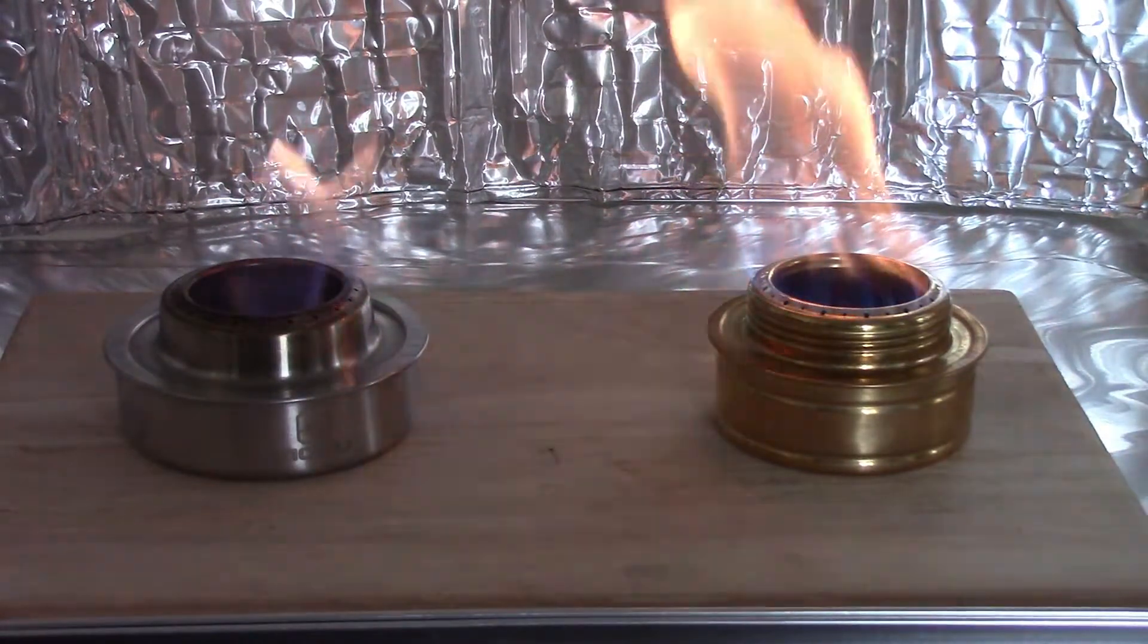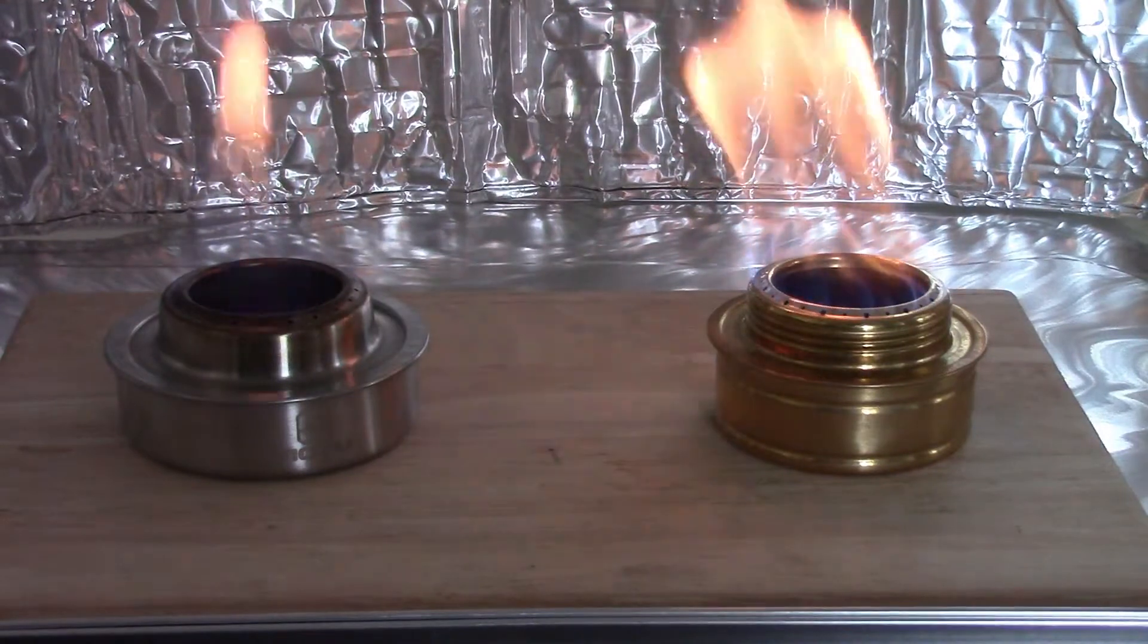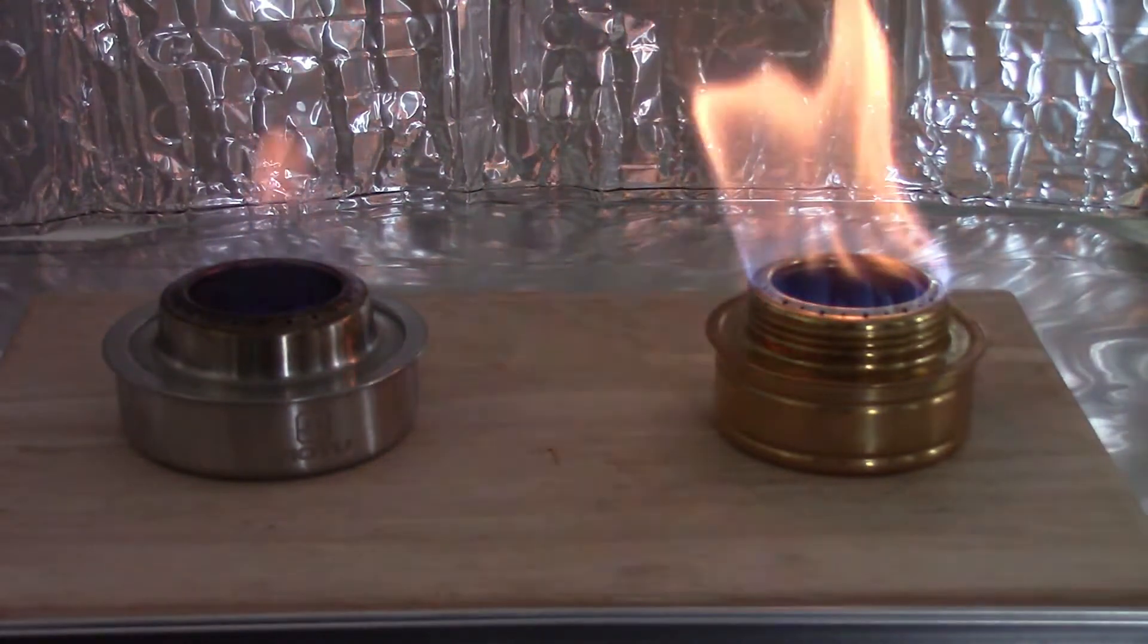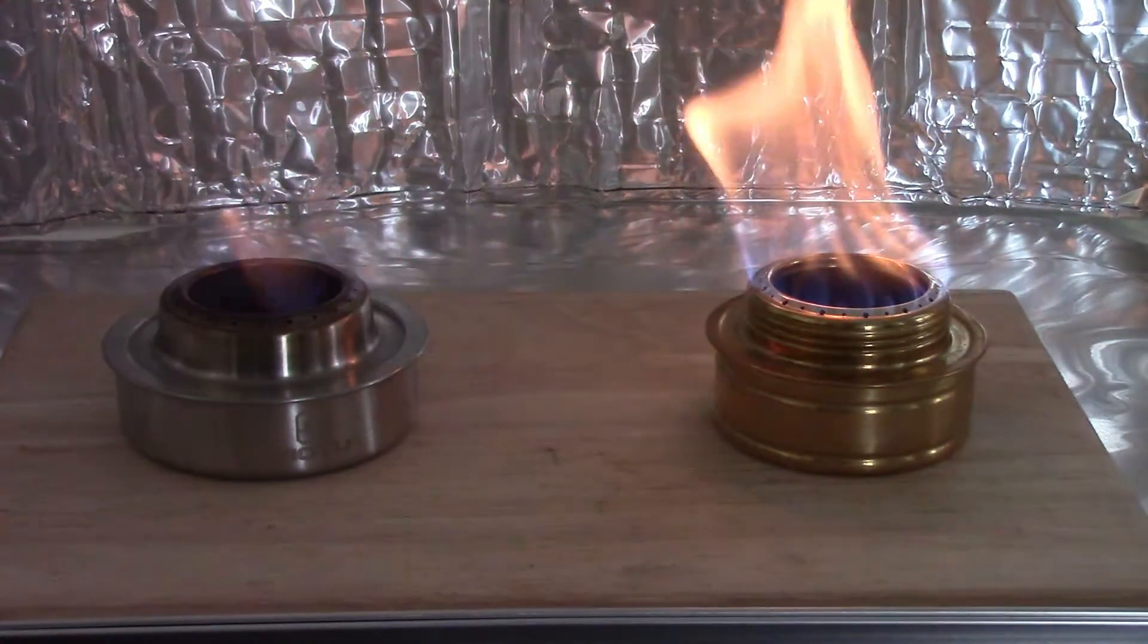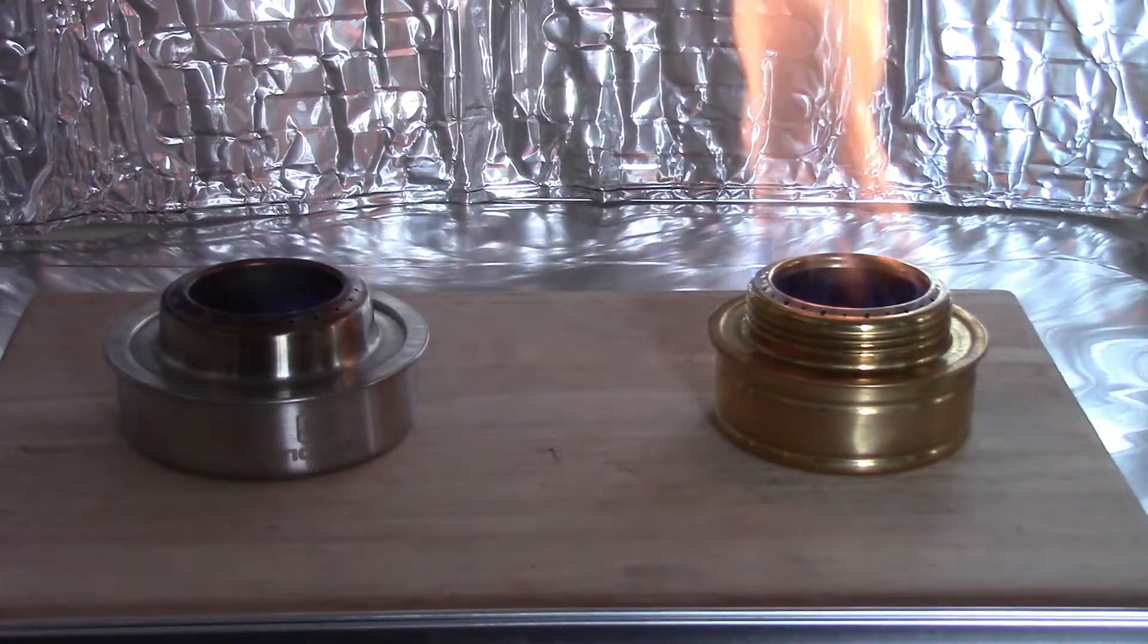Does the alcohol stove made of brass, which is a Chinese clone, have a wicking material inside that helps to pull up the alcohol and help it to bloom quicker? Whereas the stainless steel stove doesn't have that.